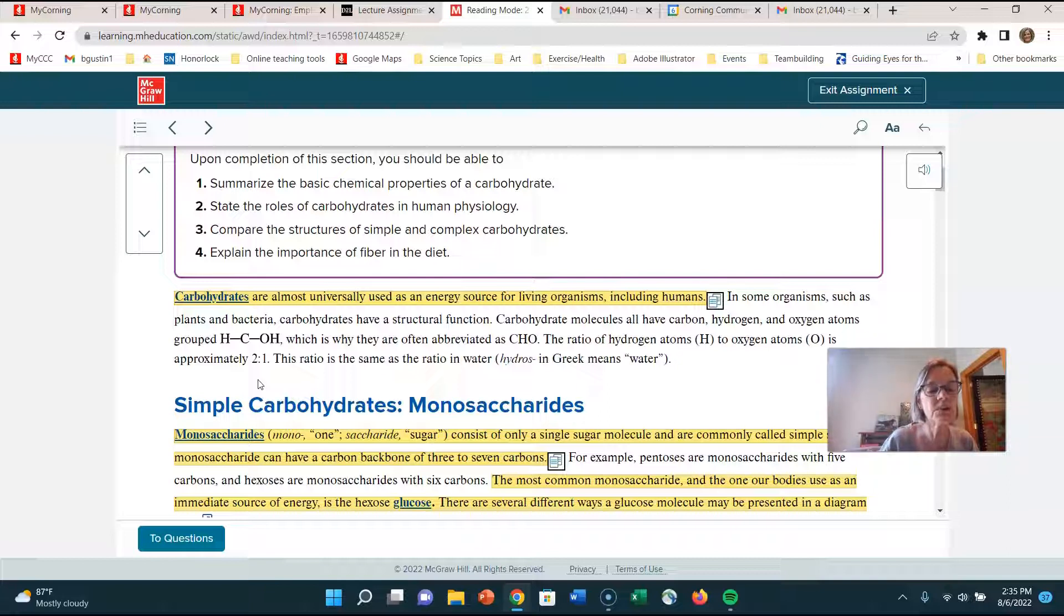So we're going to talk a little bit about the structure, the monosaccharides and the disaccharides and polysaccharides. But before we do that, just to give you, it says state the roles of carbohydrates in human physiology. And it says they are almost universally used as an energy source for living organisms, including humans. And you guys knew that already, because how many times have we talked about nutrition and carbohydrates.